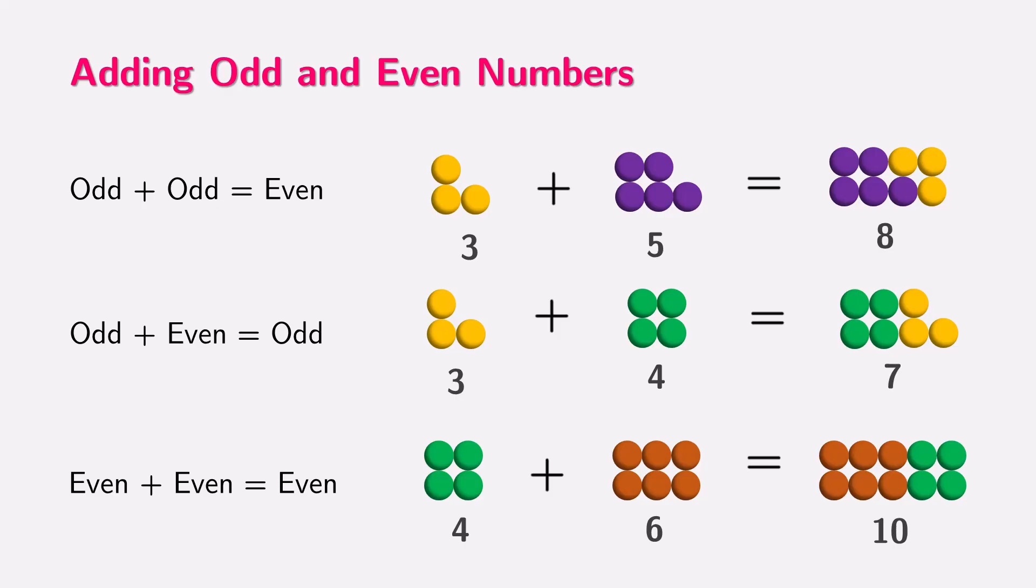Finally, when we add two even numbers, like 4 and 6, we always get an even number, 10. This is because both even numbers are already perfectly paired, so when you add them together, they still form complete pairs, resulting in an even sum.